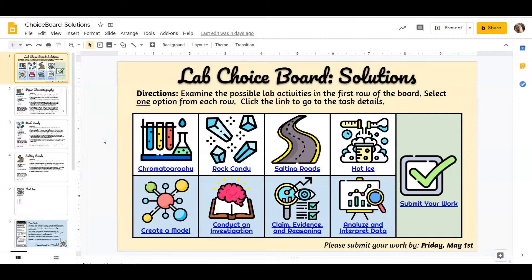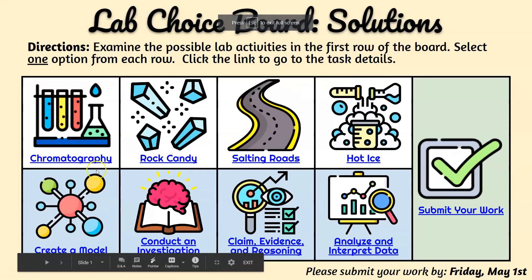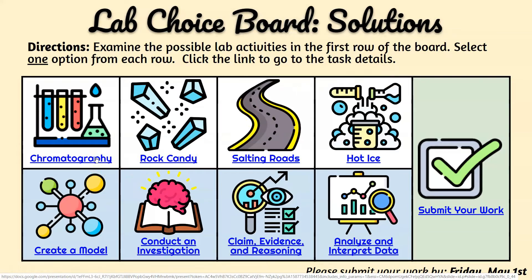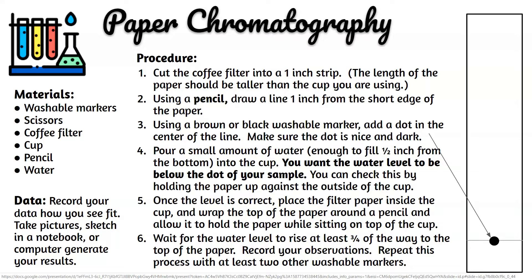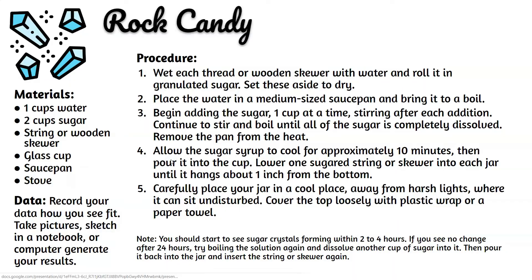I wanted to pick things that the kids could find the materials pretty easily. Chromatography, rock candy, salting roads, and hot ice are all pretty easy household chemicals that students would have. For ease of use, I incorporated links under each picture so that when the kids click on the link, it shows the materials right away so they can see what they need, and then it gives them details about how they should be recording their data and the procedure. So they have everything they need at their fingertips. If they click on rock candy, for example, they'll see the materials, the data, and the procedure, and it also provides some helpful hints.